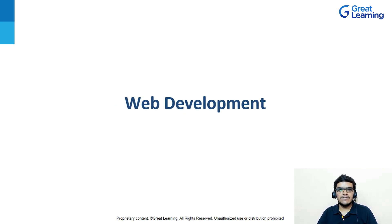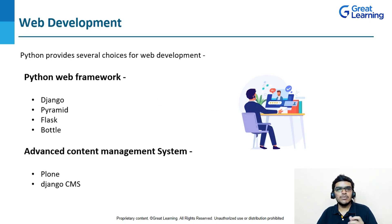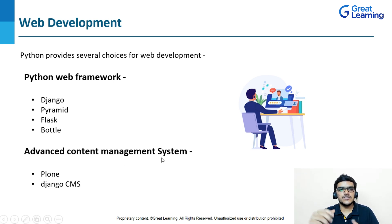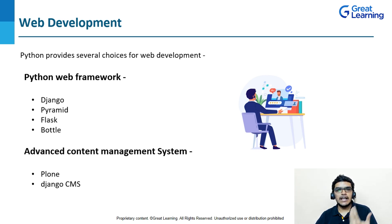The first application is web development. Python provides several choices for web development. We are having several Python web frameworks such as Django and Pyramid, and also Flask and Bottle, which are micro frameworks. Along with the web framework, Python also provides advanced content management systems such as Plone and Django CMS. Python web frameworks are known for their scalability, flexibility, and security, and consist of libraries and modules which are used to simplify tasks.